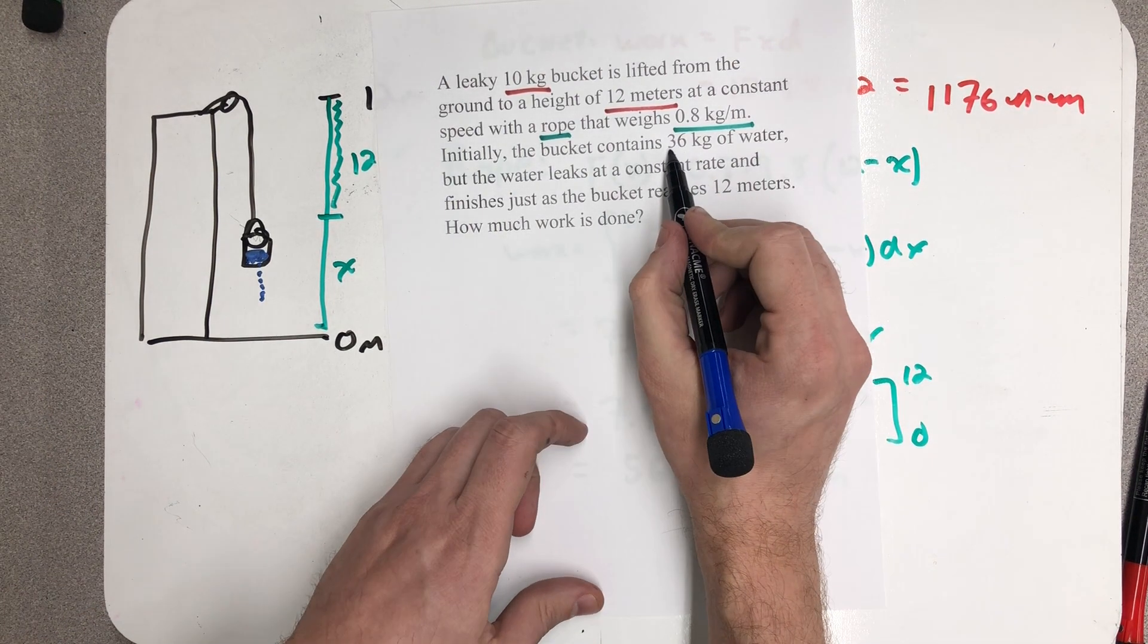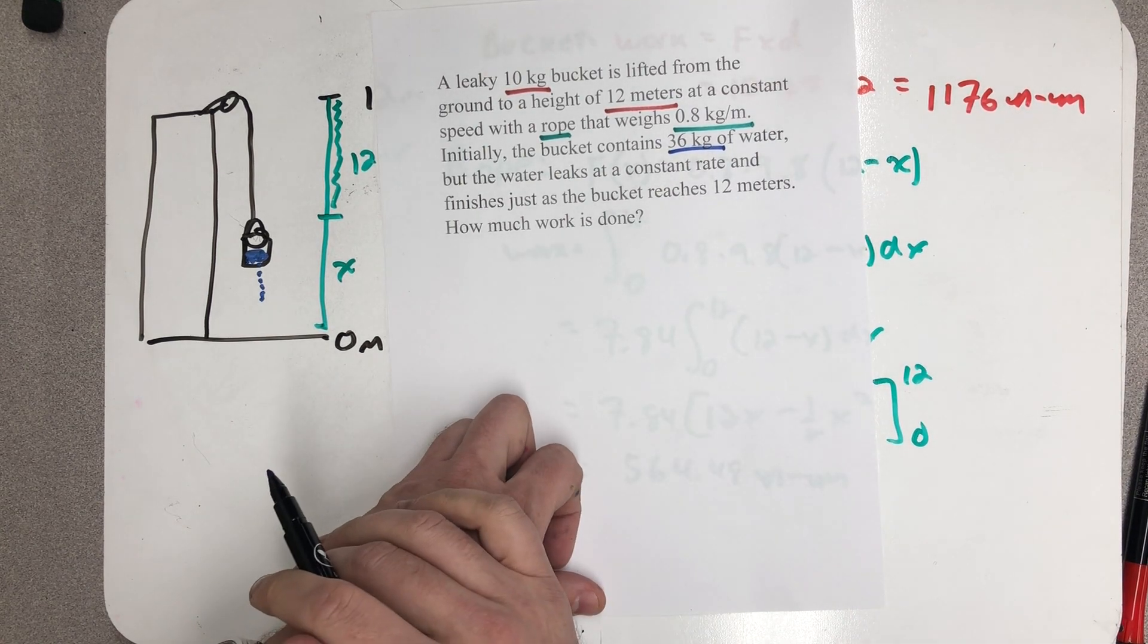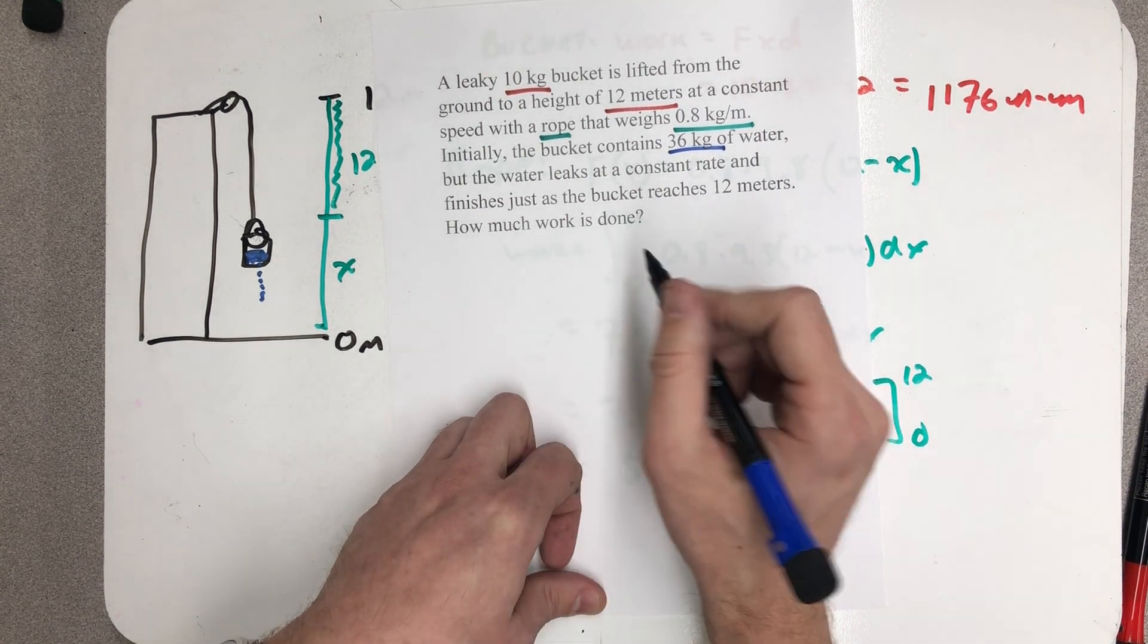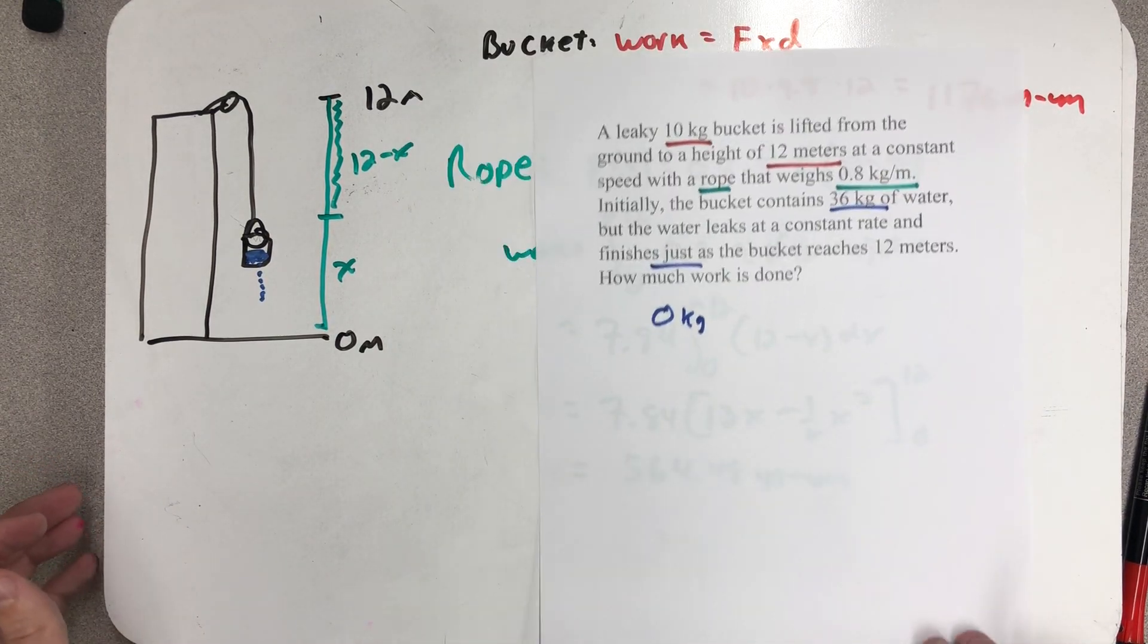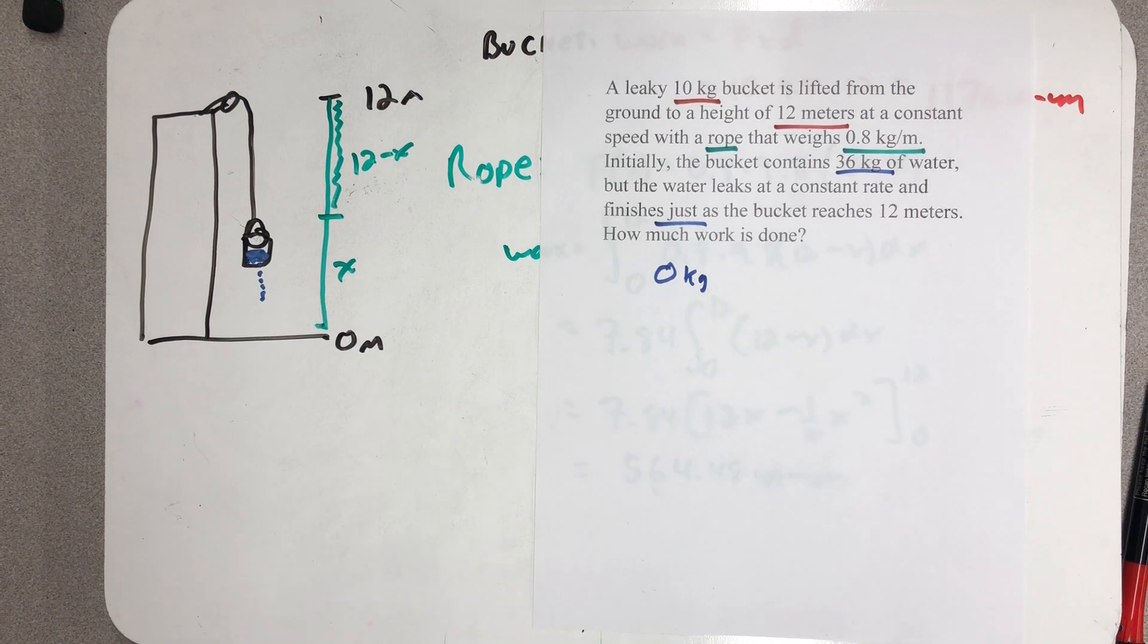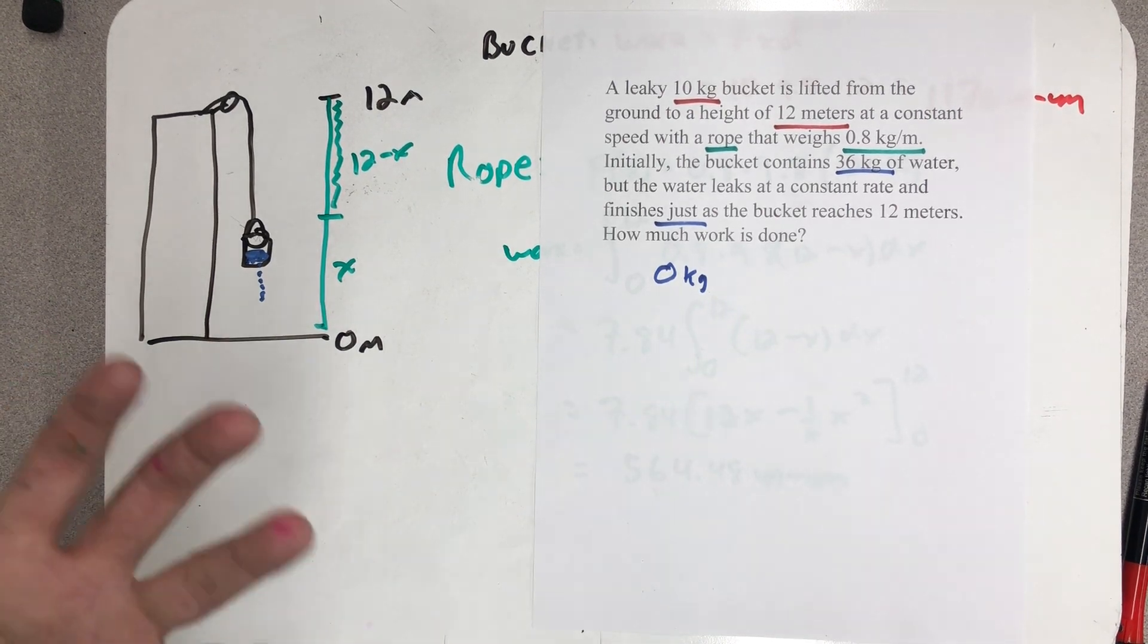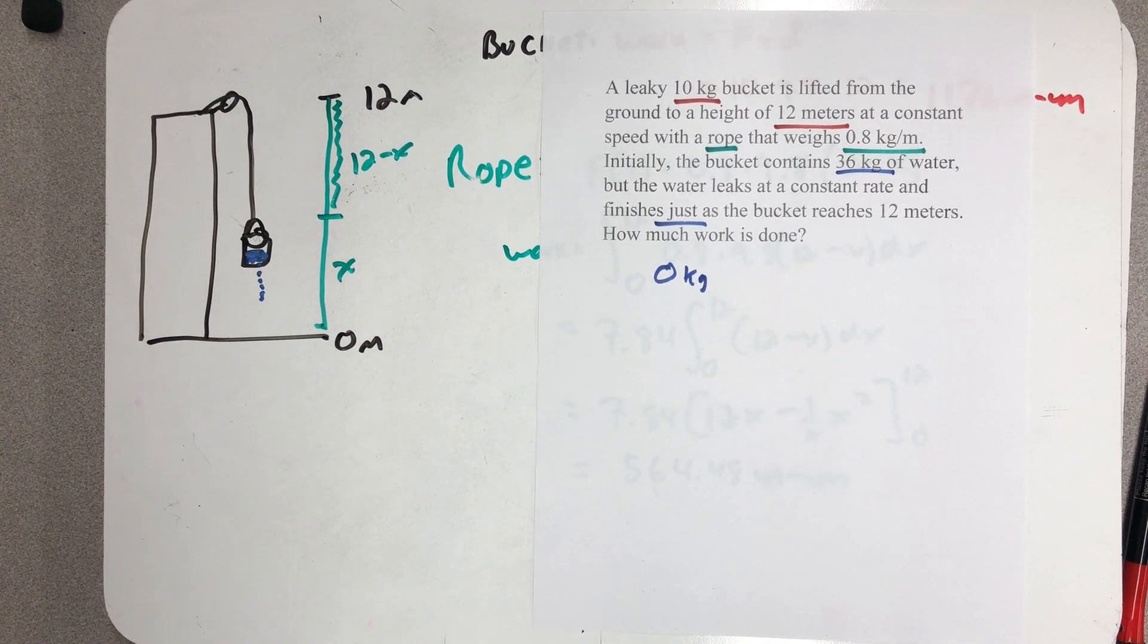So I need to think about there starting out being 36 kilograms of water and ending with zero kilograms of water at the top. What I'm going to do is, since I'm told the water is leaking at a constant rate, I can use this to calculate the rate of the leak.